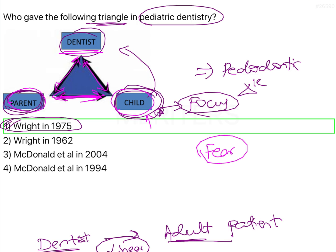This paedodontic triangle was later modified by McDonald in the year 2004. The modification McDonald gave was adding 'society' to the center of the triangle. So it is related not just between the dentist, the parent, and the child, but the reciprocal communication also has society at the center, meaning the management protocols applied by the dentist should be in a manner that is acceptable to society. This modification was given by McDonald, and this could be asked in examinations — who gave the modification of the paedodontic triangle.